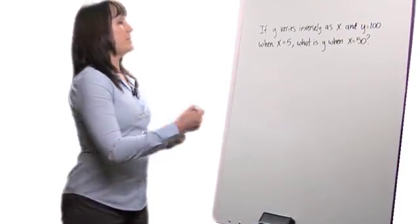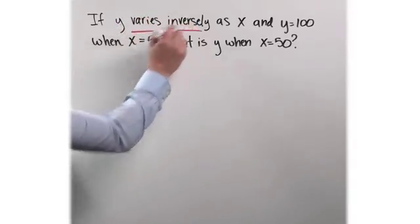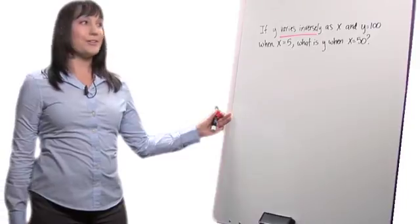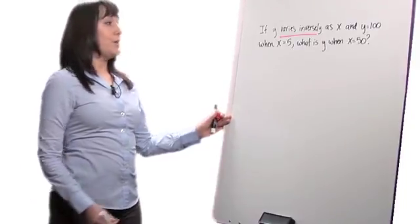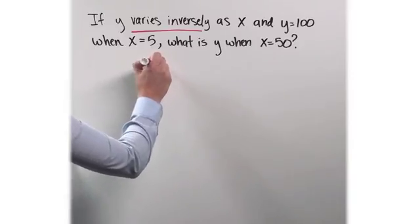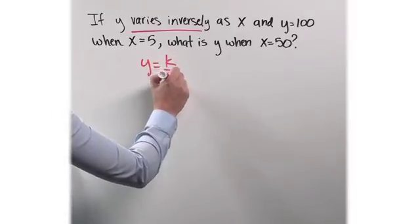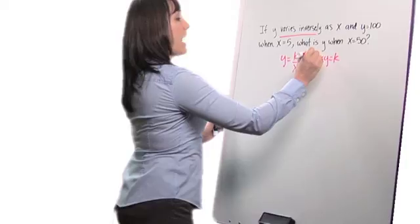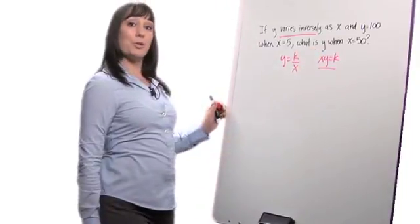I'm going to use my inverse variation formula because the problem actually says those words varies inversely. So I have two options. I could do y equals k over x, or xy equals k. I actually like using this one, so I'm going to use that one.